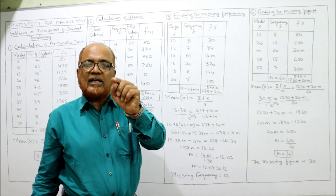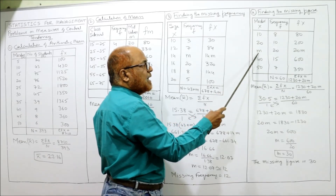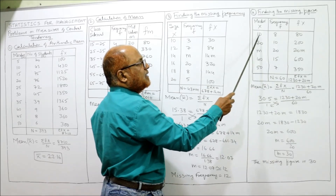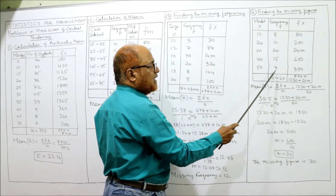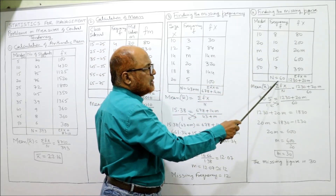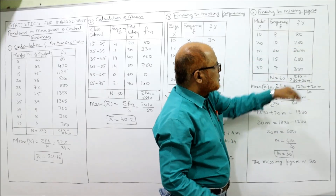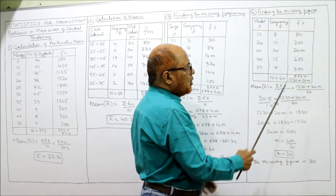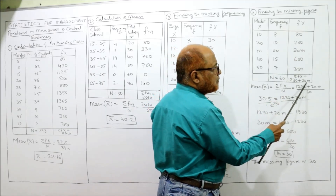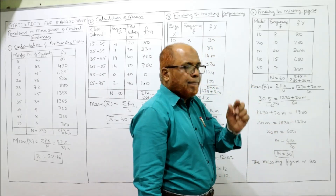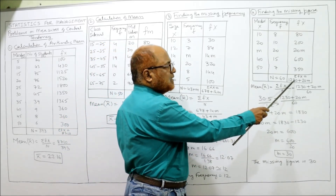Denote the missing mark as M. Multiply F × X: 10 × 8 = 80, 20 × 10 = 200, M × 20 = 20M, 40 × 15 = 600, 50 × 7 = 350. Total frequency N = 60. Adding all constant FX values: 80 + 200 + 600 + 350 = 1230, so ΣFX = 1230 + 20M.